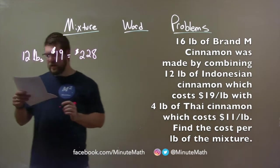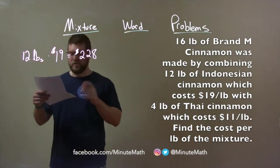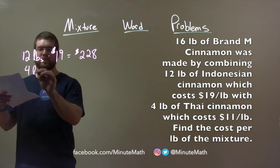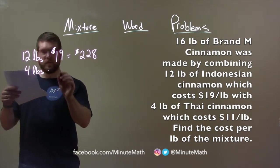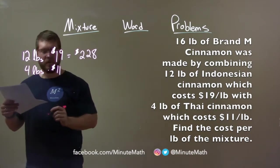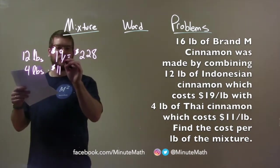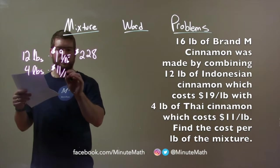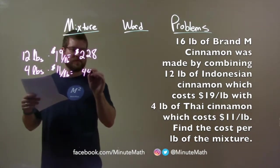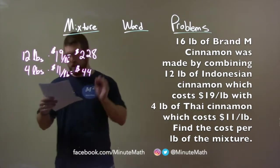The second Thai cinnamon, which is 4 pounds, costs us $11 per pound. 4 times 11 is $44, so we have $44 total here.